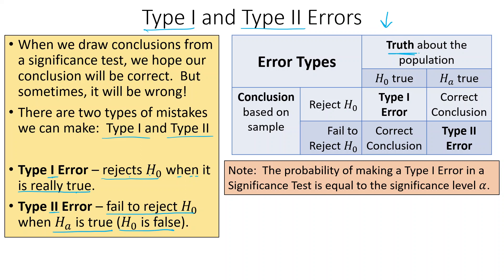Here's a handy table to try and explain what's going on. We have the truth about the population: either the null hypothesis is true, or the null hypothesis is not true — the alternative is true, in other words, the null hypothesis is false. We have two conclusions we can make: we can reject the null hypothesis, or we can fail to reject it. So if the null hypothesis is true and we reject it, that's a Type 1 error, because the correct thing to do is fail to reject the null hypothesis.